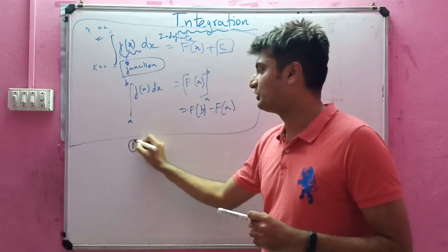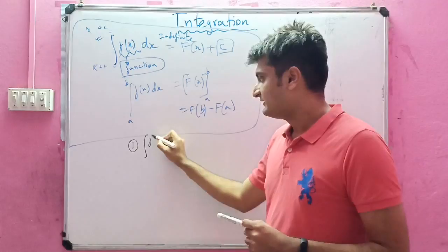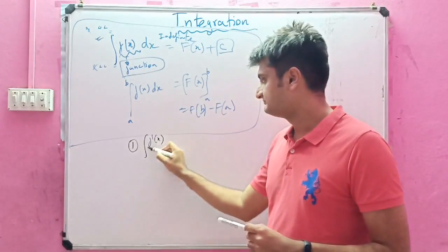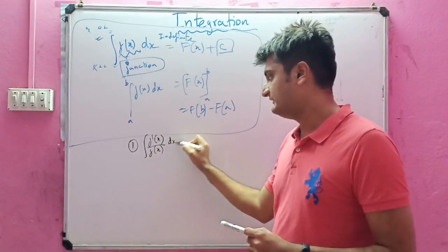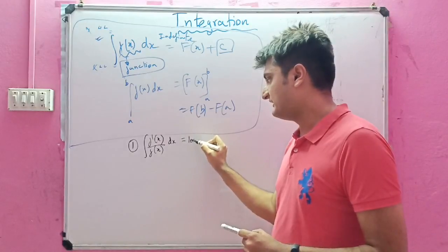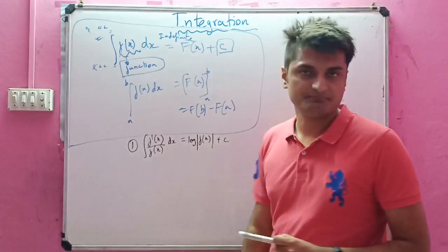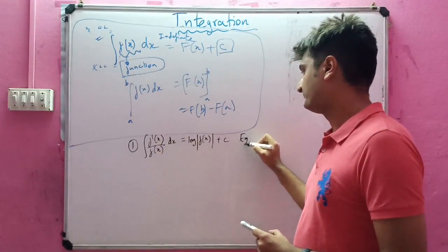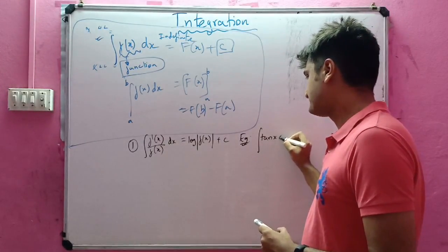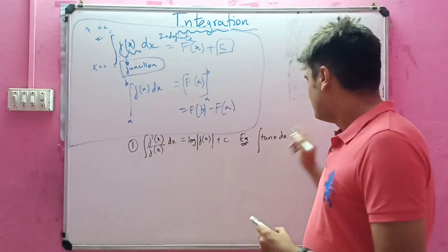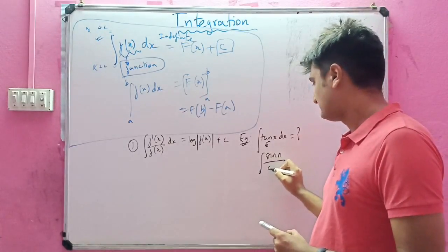The first and foremost important rule is whenever we have integral of a derivative divided by the original function dx, this I can write as log mod f of x. For example, if we have integral of tan x dx, we know that tan x can be written as sin x by cos x.